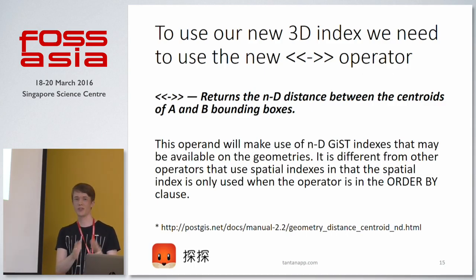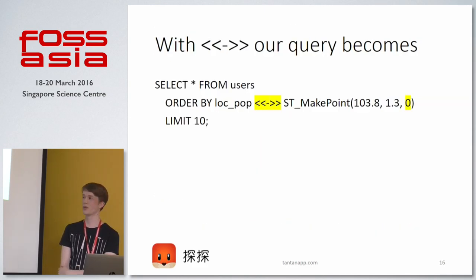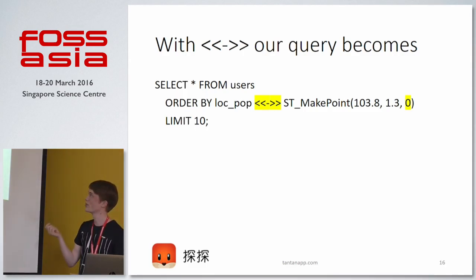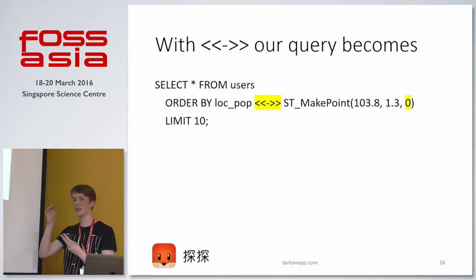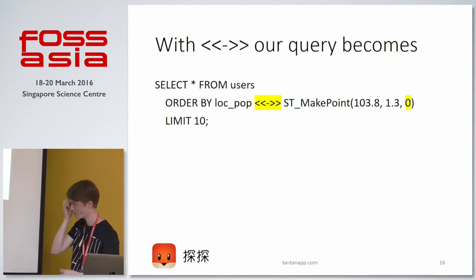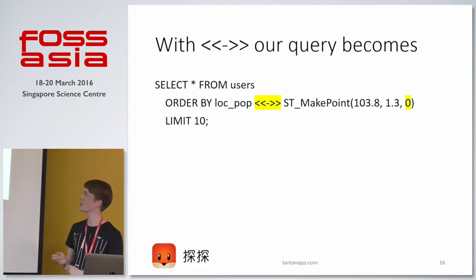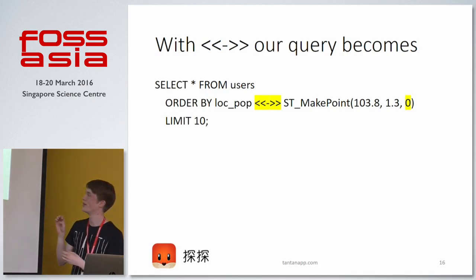Now that we have the operator and the data, we can rewrite our query: we select from users, order by location_popularity using the new operator with a MakePoint of our x and y and 0 — because we want popularity to be as close to 0 as possible — and then LIMIT by 10. The query becomes pretty easy to read, but a little bit more difficult to reason about because you can't immediately see how popularity affects the ordering just by looking at it.